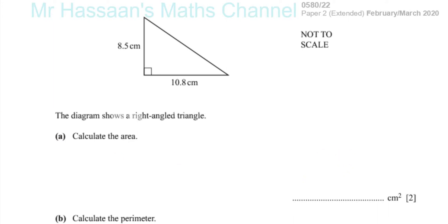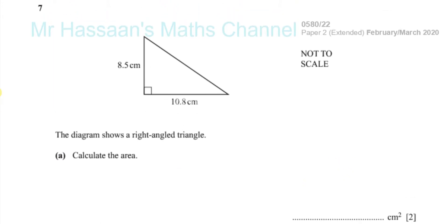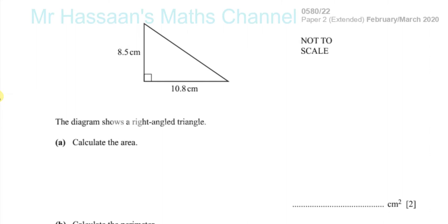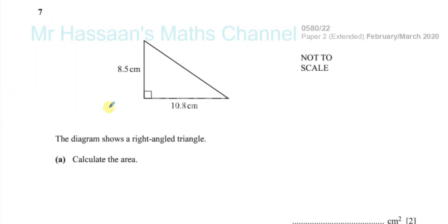Okay, now for question number seven. Question number seven from the paper to February-March 2020, IGCSE Cambridge paper. Now, question number seven shows us a right-angled triangle, and we're asked to find the area of this right-angled triangle.